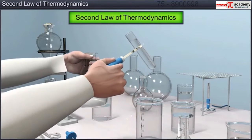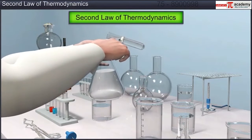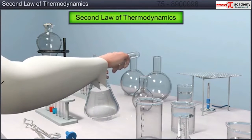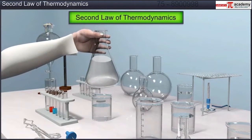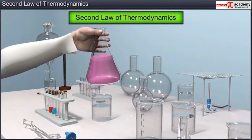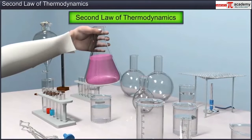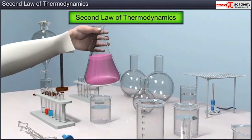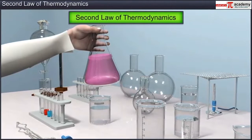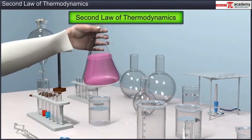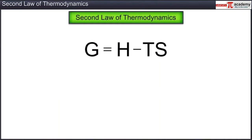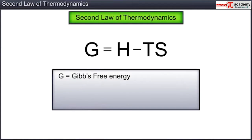Chemists, however, are usually more interested in the reaction mixture or the system rather than the surroundings. Hence we can state the second law of thermodynamics in terms of the thermodynamic properties of the system without taking into consideration the surroundings. This can be done by taking into account the Gibbs free energy, G.